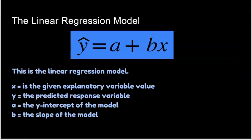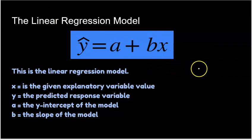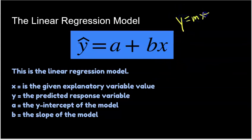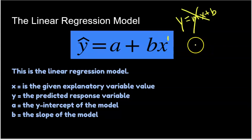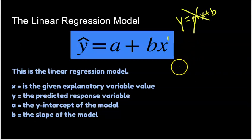Here is what a linear regression model looks like. It is linear — it has a degree of 1, so the highest degree you'll see on x is 1. But we write it in a little bit of a different way. You're probably used to, back in algebra, writing y = mx + b. Well, we are not going to use that. We're still going to use a linear equation, but we're going to write it in the form of ŷ = a + bx.